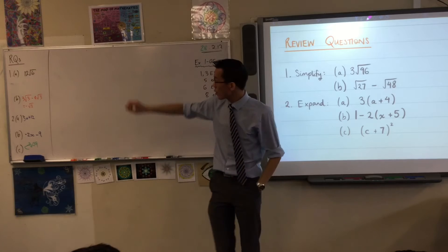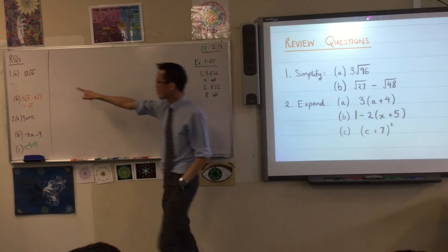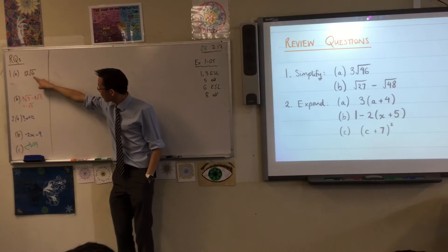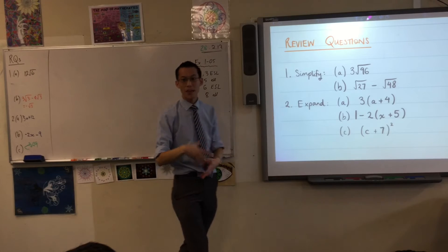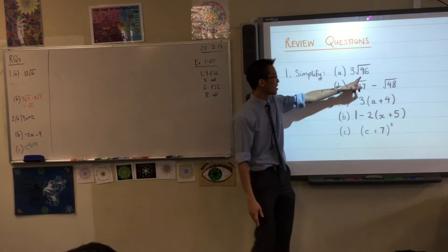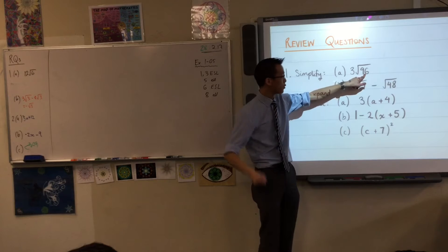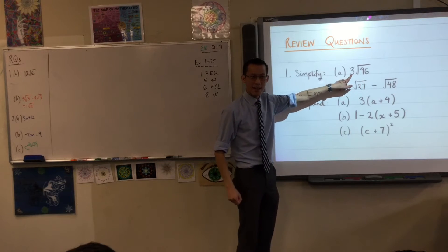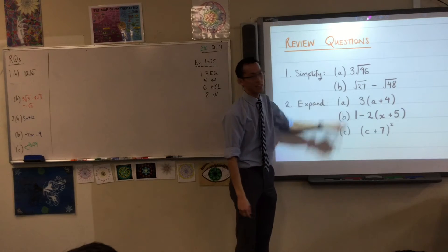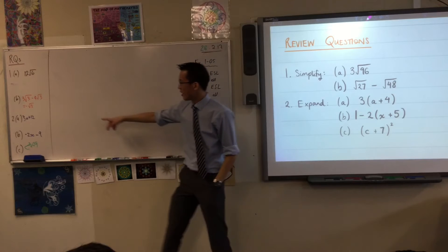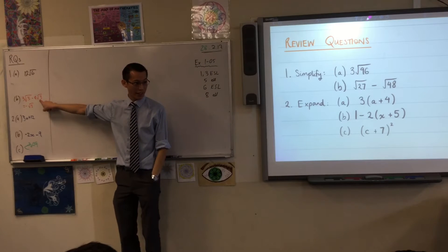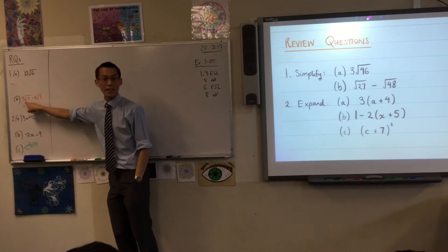But here's the important thing. The square root of 6, even though this number at the front is bigger, having this guy be smaller is more valuable. Having the number under the square root be small is more valuable than having a small number here. And a perfect example of why is part b. Have a look. You can see here, we've got a line of working here, which is very helpful. Do you agree with that line of working?